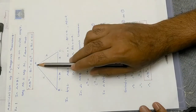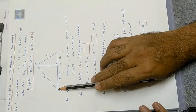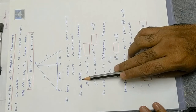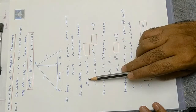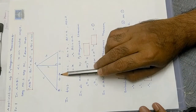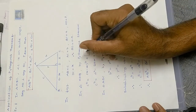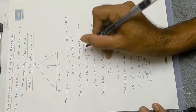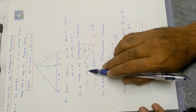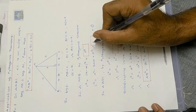In triangle ADB, it is a right angle triangle with hypotenuse AB. By Pythagoras theorem: c² = (a − x)² + p². Expanding: c² = a² − 2ax + x² + p². This is equation number one.